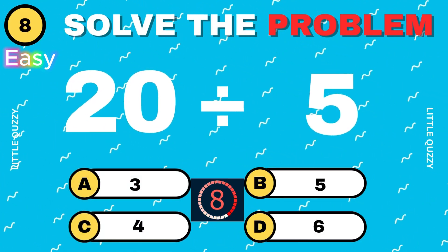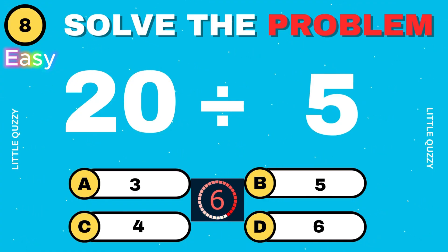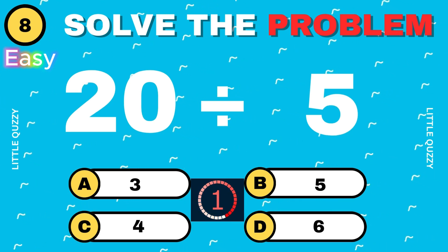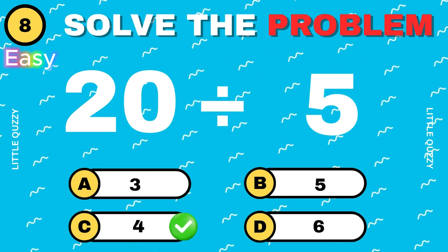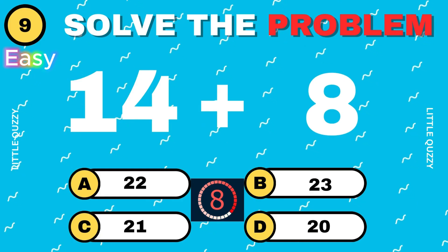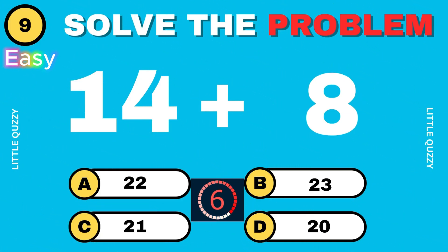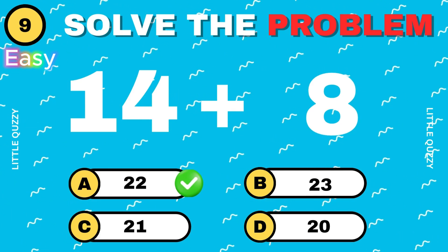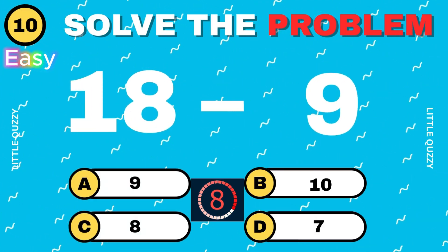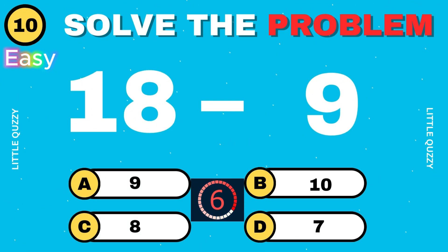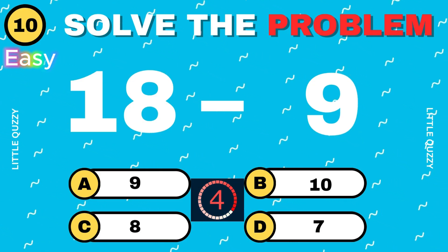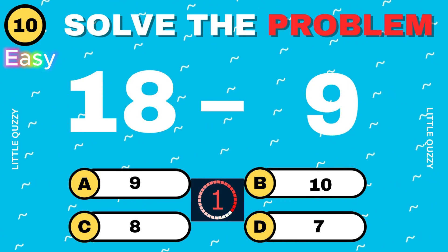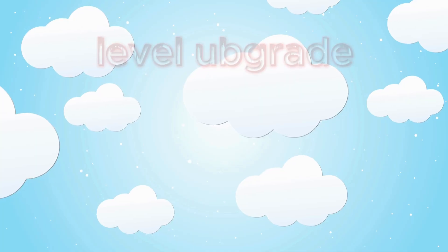What is 20 divided by 5? The correct answer is 4. What is 14 plus 8? The answer is 22. What is 18 minus 9? The correct answer is 9. Level up break!